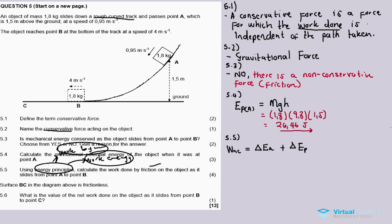Work done by non-conservative forces equals the change in kinetic energy plus the change in potential energy. Where B is our final position and A is our initial position. The change in kinetic energy is: half m·v_B² minus half m·v_A², plus m·g·h_B(final) minus m·g·h_A(initial).